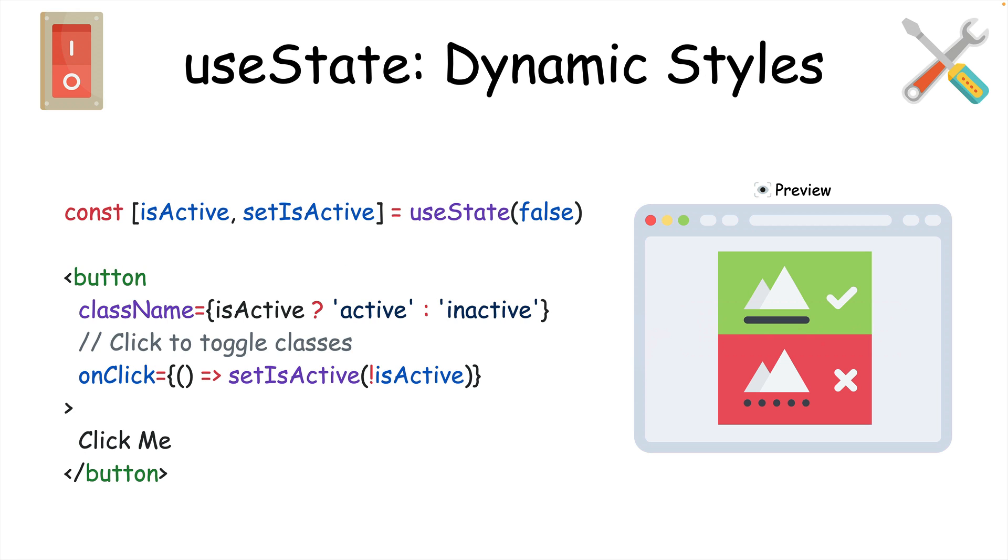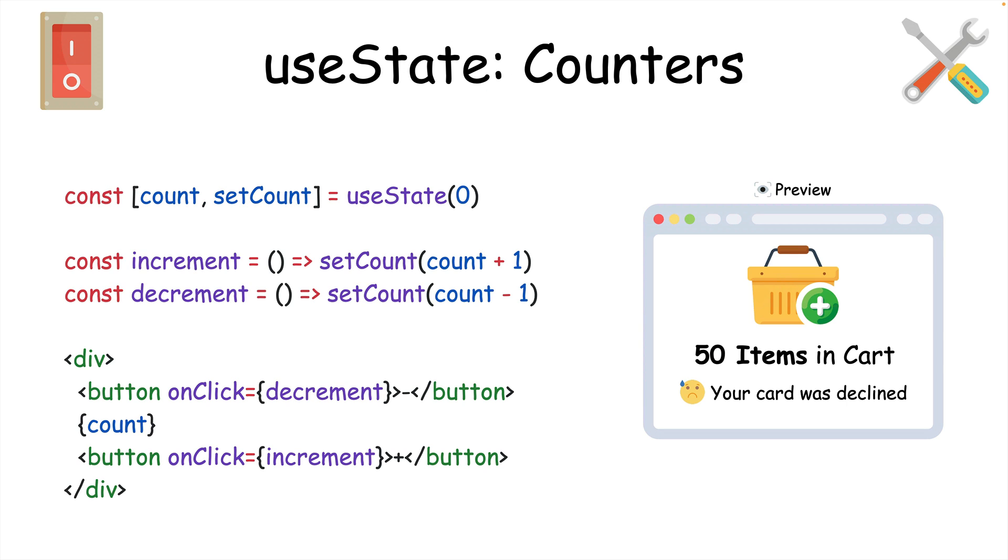You can also use a Boolean state variable to conditionally apply classes and styles. And working with number values like in a shopping cart or counter is another perfect use case for useState.